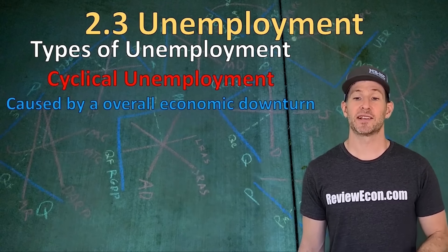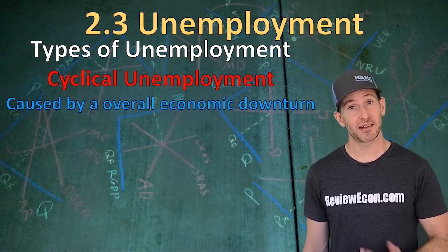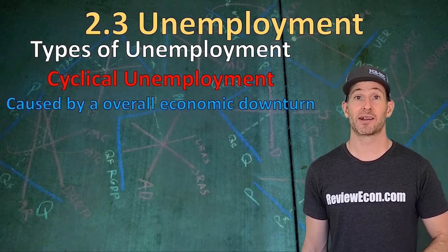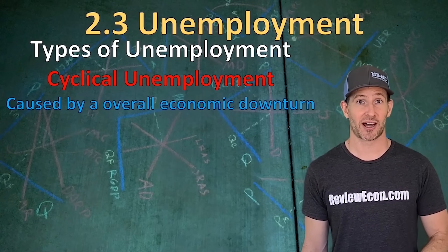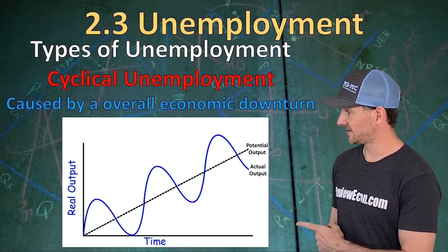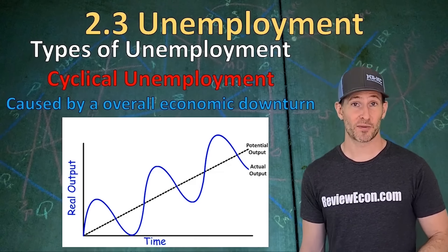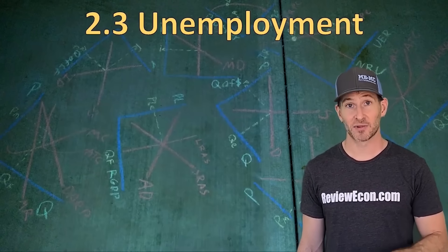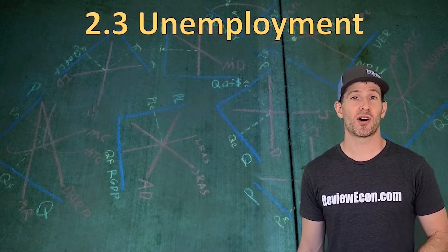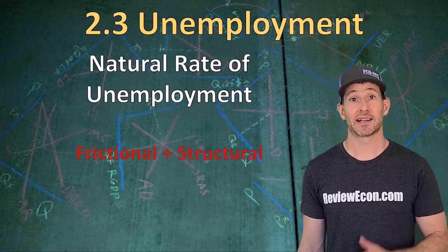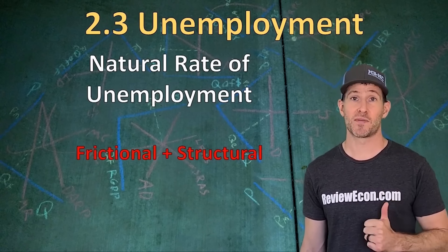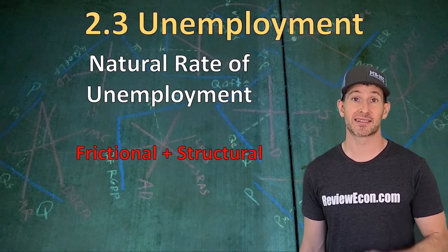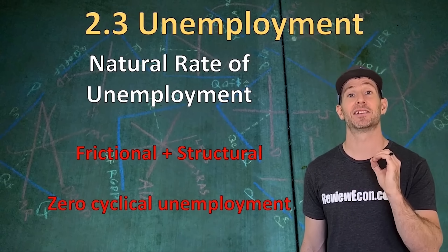The third type is cyclical unemployment, which exists when there's an economic downturn caused by the business cycle. Since we will always have some level of unemployment, we have what is called the natural rate of unemployment — that's frictional plus structural unemployment — which also means cyclical unemployment is zero.